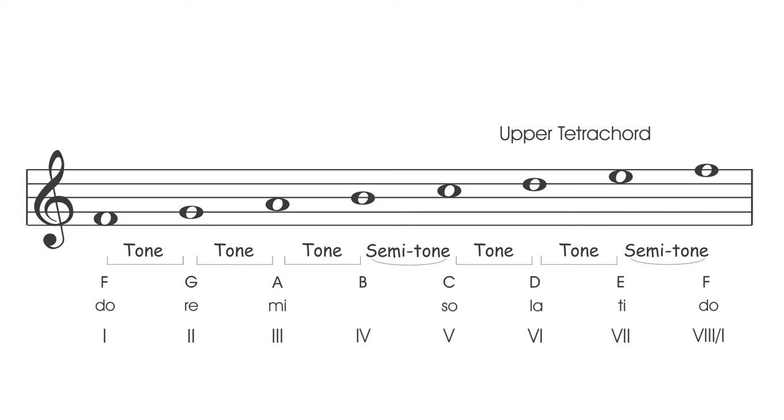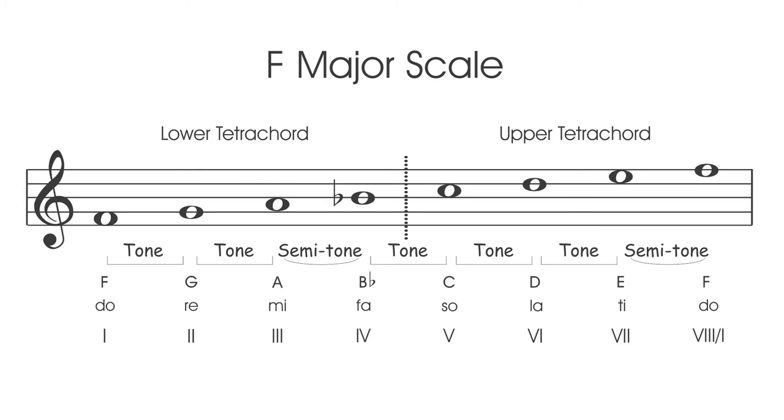In order to make the sound between the third and the fourth degrees smaller, simply lower the B to Bb, which will be the correct sound for FA, and will in turn open up the connecting interval between the tetrachords to a whole tone. This completes the correct upper and lower tetrachords of the F major scale.